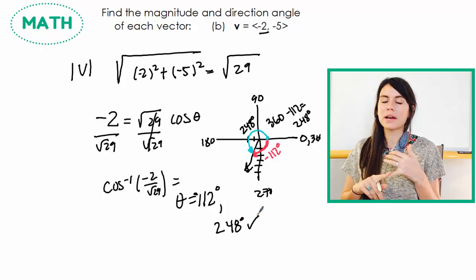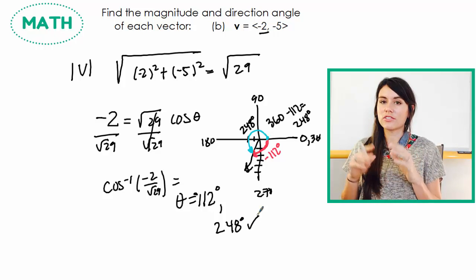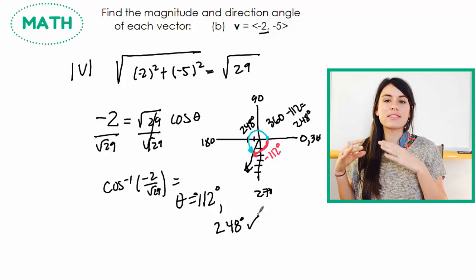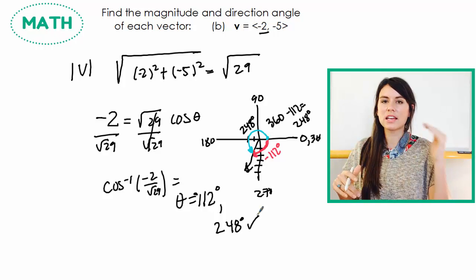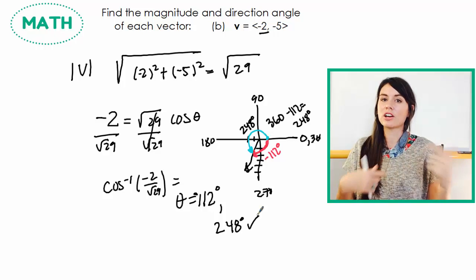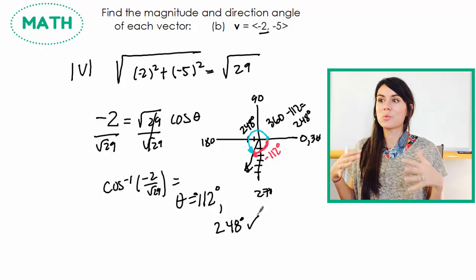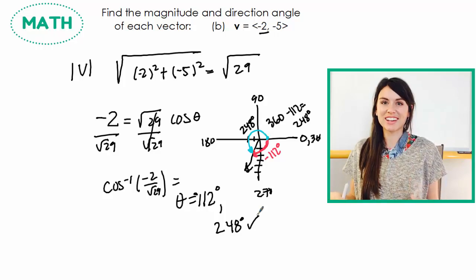And so I'm done. I've learned how to use magnitude and direction to find my component vector, and then I've learned how to take my component vector and use that to find magnitude and direction. So I've gone forwards, and I've gone backwards. So I am done with direction angles of vectors.